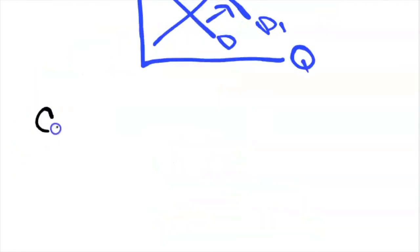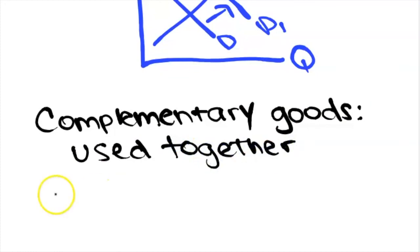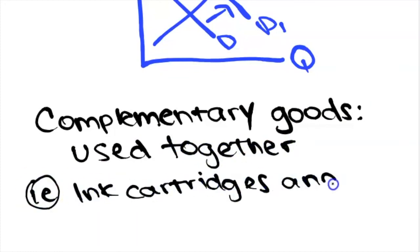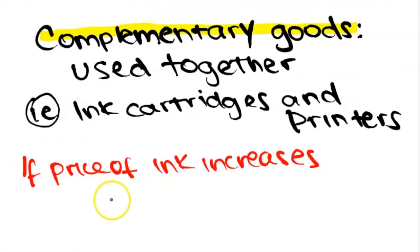Consumer complements, on the other hand, are goods that are used together. For instance, milk and coffee or ink and printers. For complements, a fall in the price of one good causes an increase in the demand for another good.